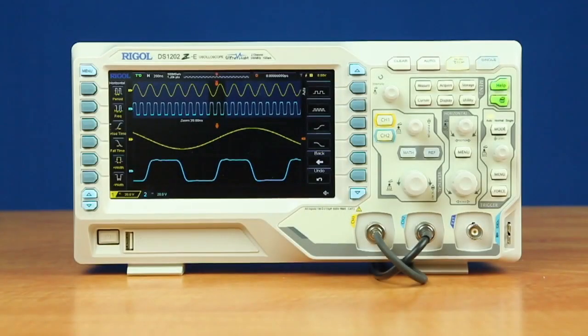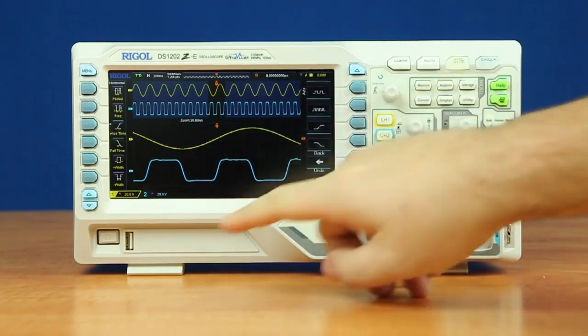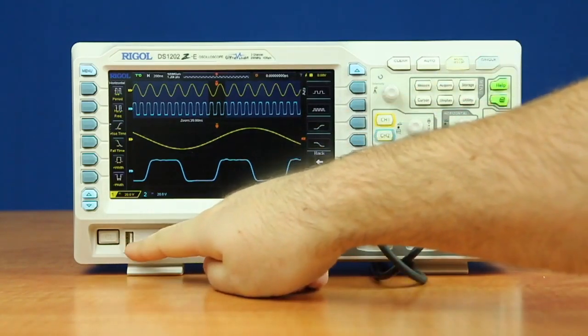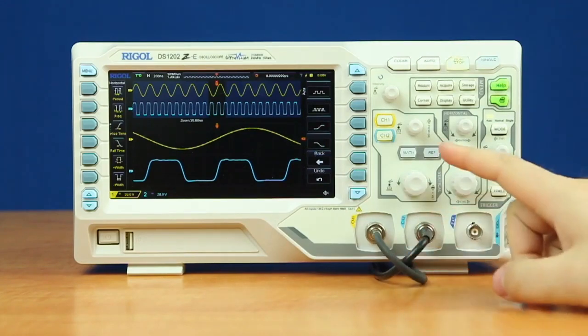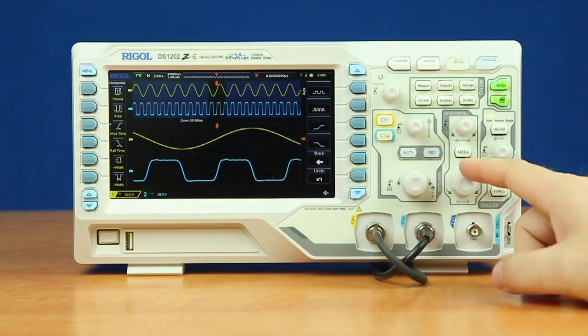On the front panel of the instrument we have a 7-inch color display, below that we have a mechanical power button and USB port, and we have two analog inputs which can be controlled with our vertical and horizontal scaling and position knobs.